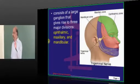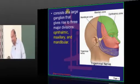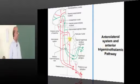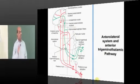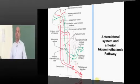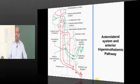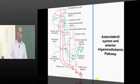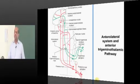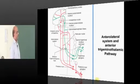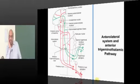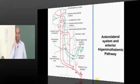The three divisions of the trigeminal are ophthalmic, maxillary, and mandibular. If you look at pain and temperature in the body — trunk and limbs — it comes through the anterolateral spinothalamic tract. Similarly, we have a trigeminothalamic pathway which carries pain and temperature from the face. That is what we need to basically appreciate.